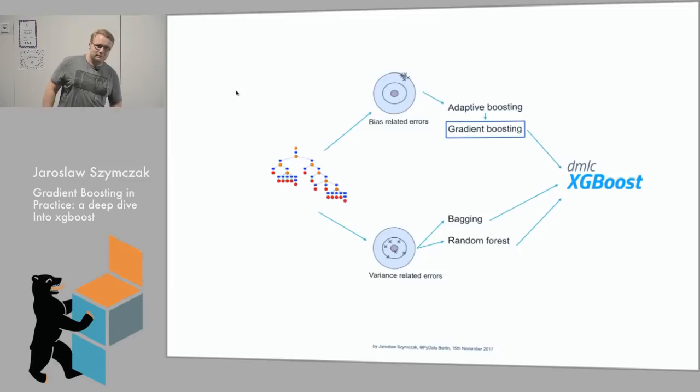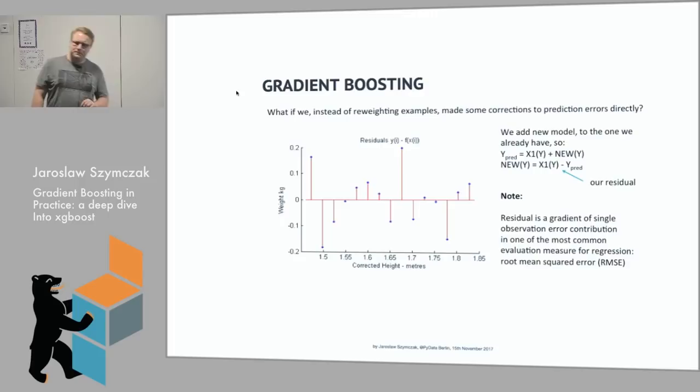But nowadays much more used and much more known than adaptive boosting is gradient boosting. And the idea is quite similar. The easiest would be to actually present it on a regression problem. When you have a regression problem and you fit some initial classifier, or actually in many boosting algorithms nowadays you just start with a simple mean of all your data, you have errors coming from this fit. And actually in every round of boosting you try to compensate for these errors.